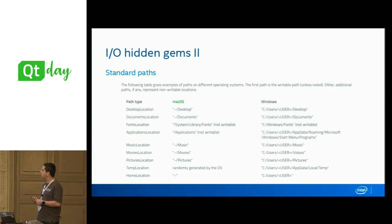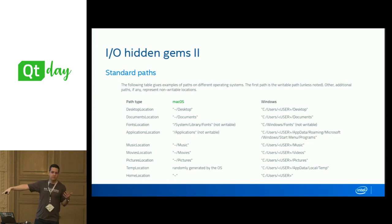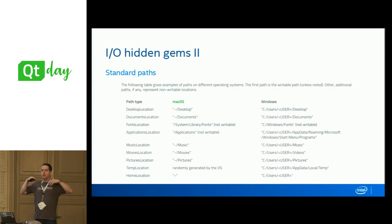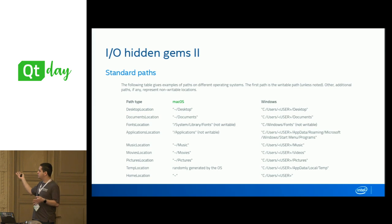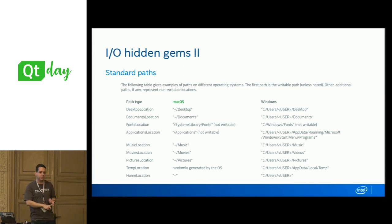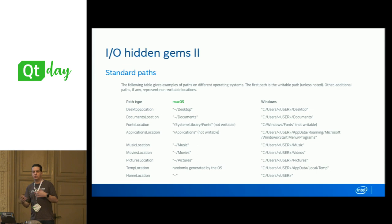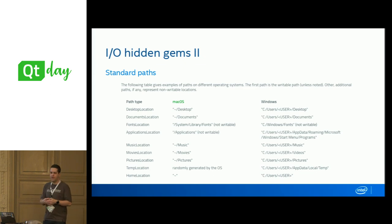Another hidden gem: QStandardPaths. It's a class that tells you, by operating system, where you can find or save various things — fonts, movies, generic data, application-specific data, config files, and more. You don't need to hardcode those paths in your application. Just ask QStandardPaths where to put things.